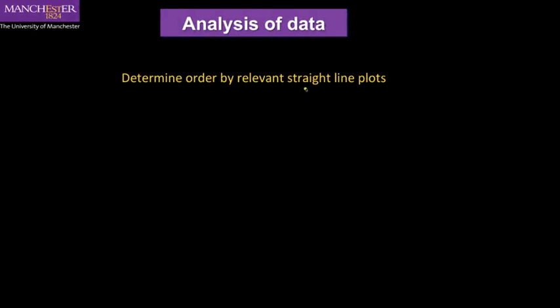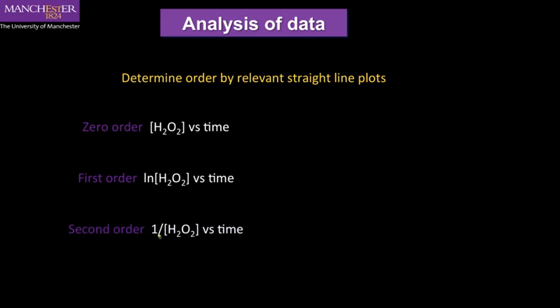Now, if we want to determine the order of the reaction, we have to make some relevant plots. And if they're a straight line, then we'll be able to determine the order of the reaction. Let's suppose the reaction was zero order. Then the relevant plot will be just plotting the concentration of hydrogen peroxide versus time. If it's first order, we need to plot the natural log of the hydrogen peroxide concentration versus time. And if it's second order, we need to plot one over the concentration versus time.